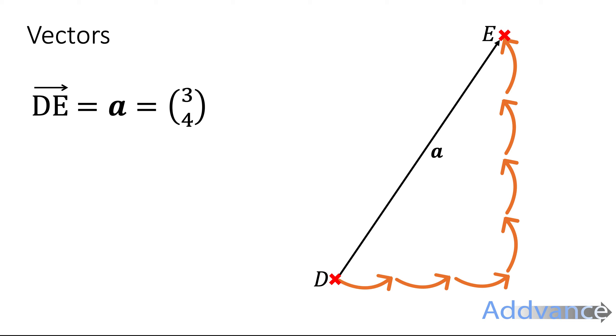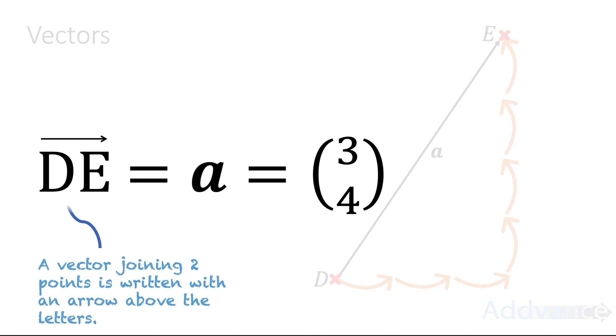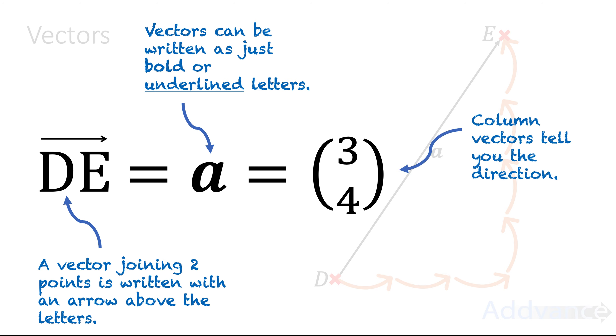The top number tells you how far across you go and the bottom number tells you how far up and down you go. So we can write it as DE with an arrow above tells you it's going between those two points. We can write it as an actual letter but we can either write it as bold or underlined to make it clear that it's a vector or we can write it as a column vector to tell you the direction across and the direction up.